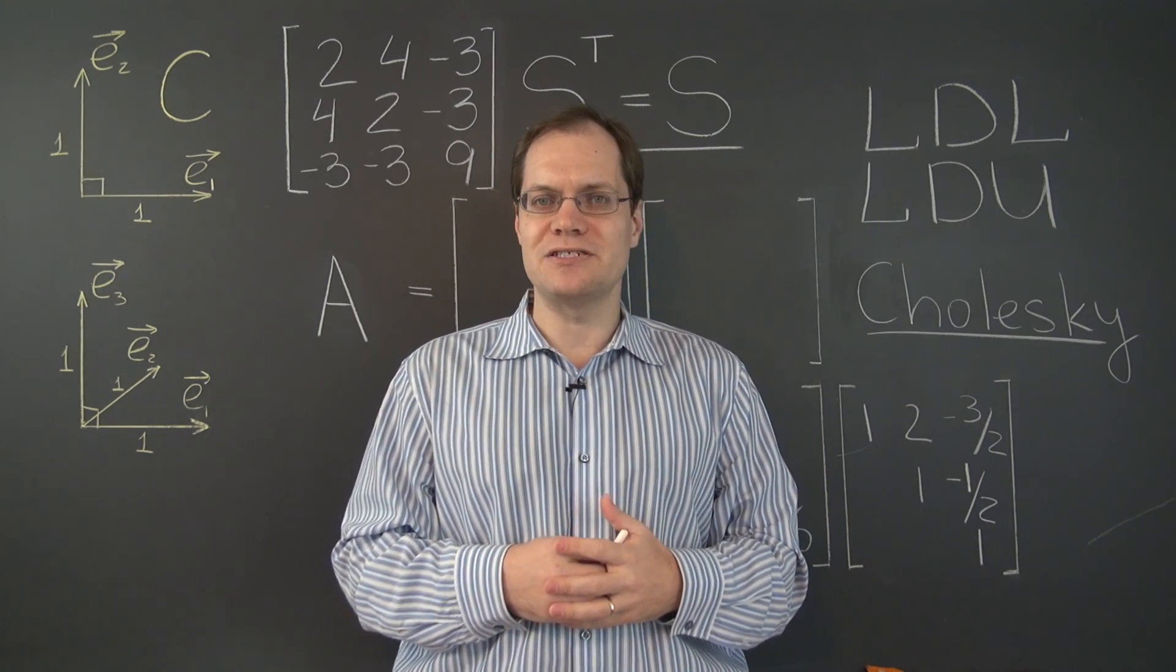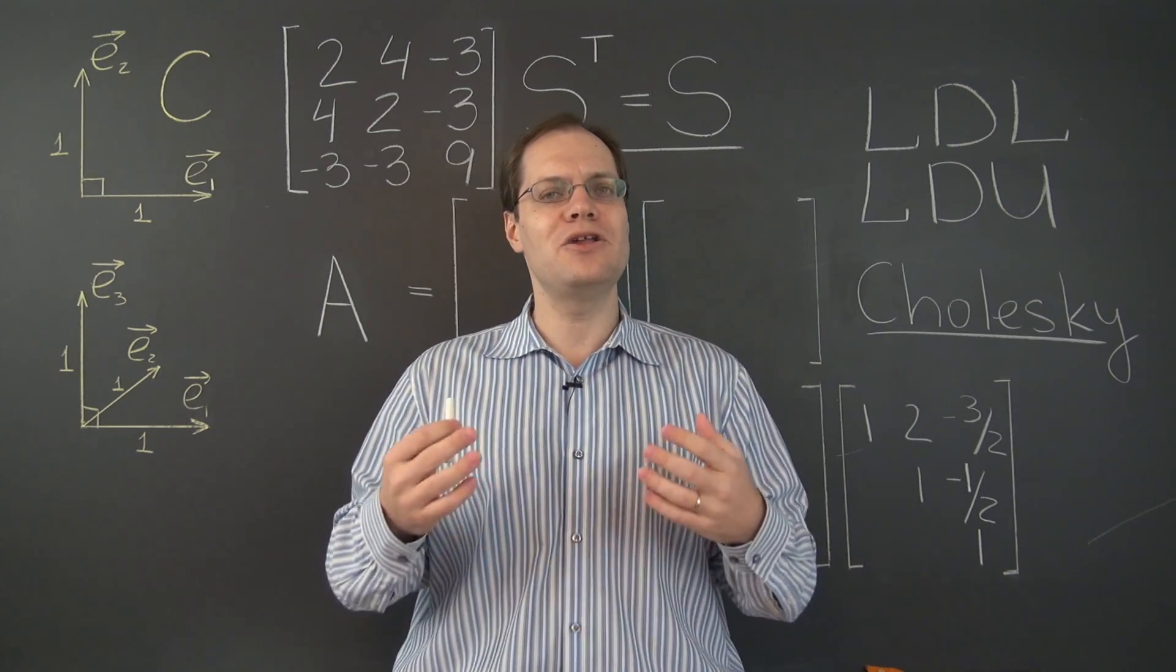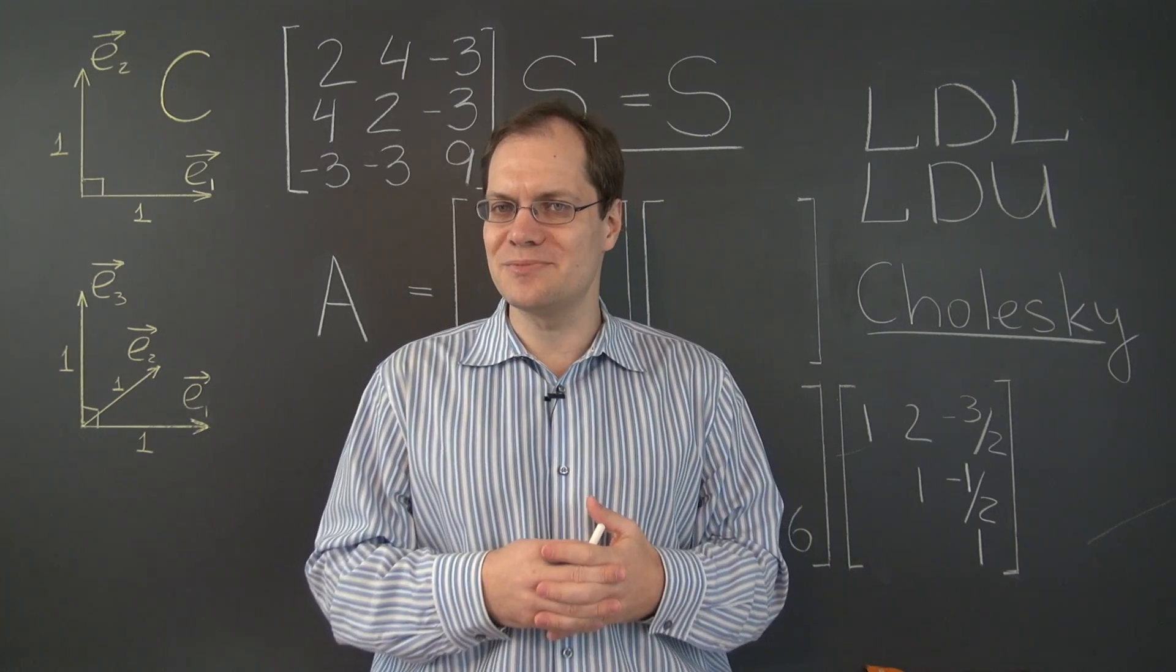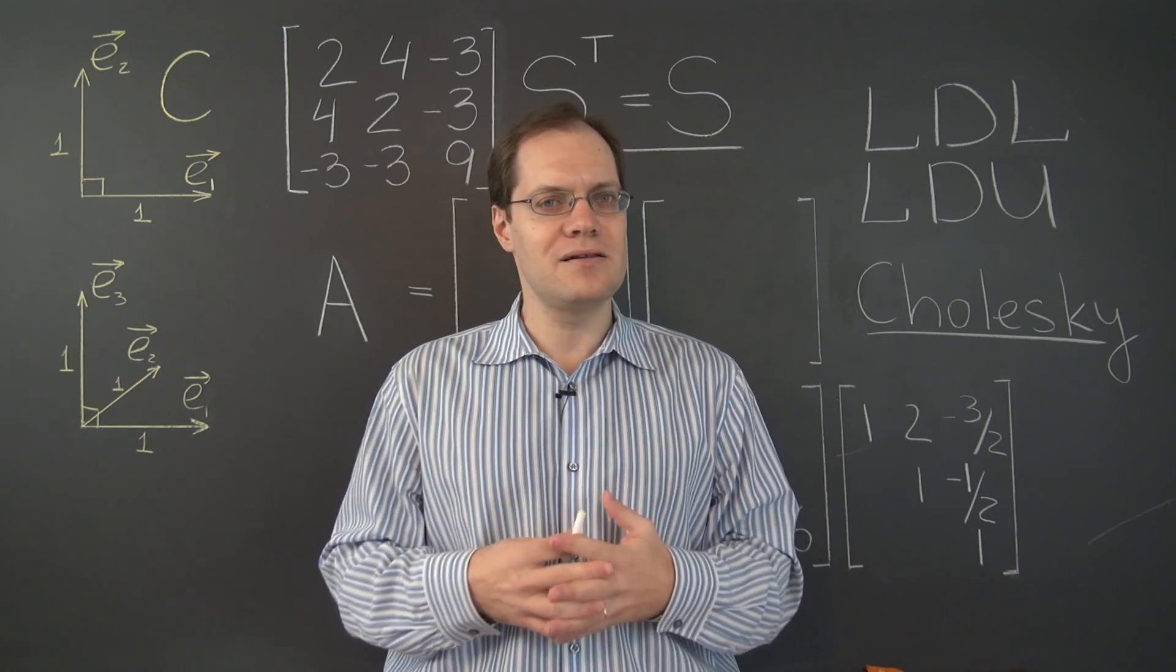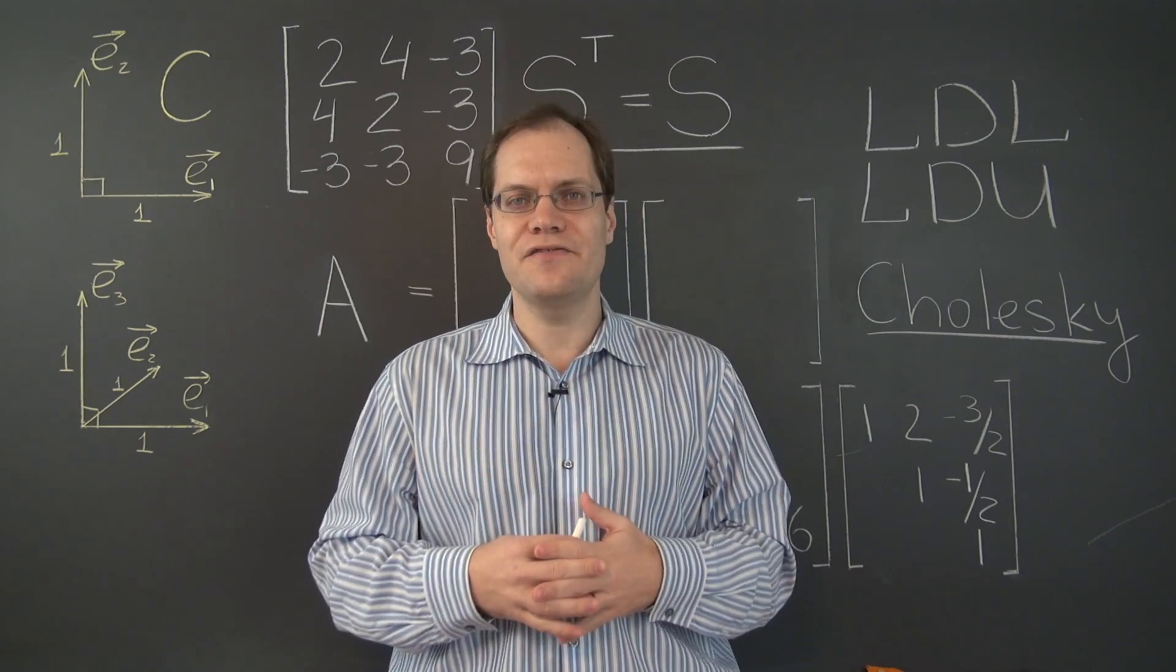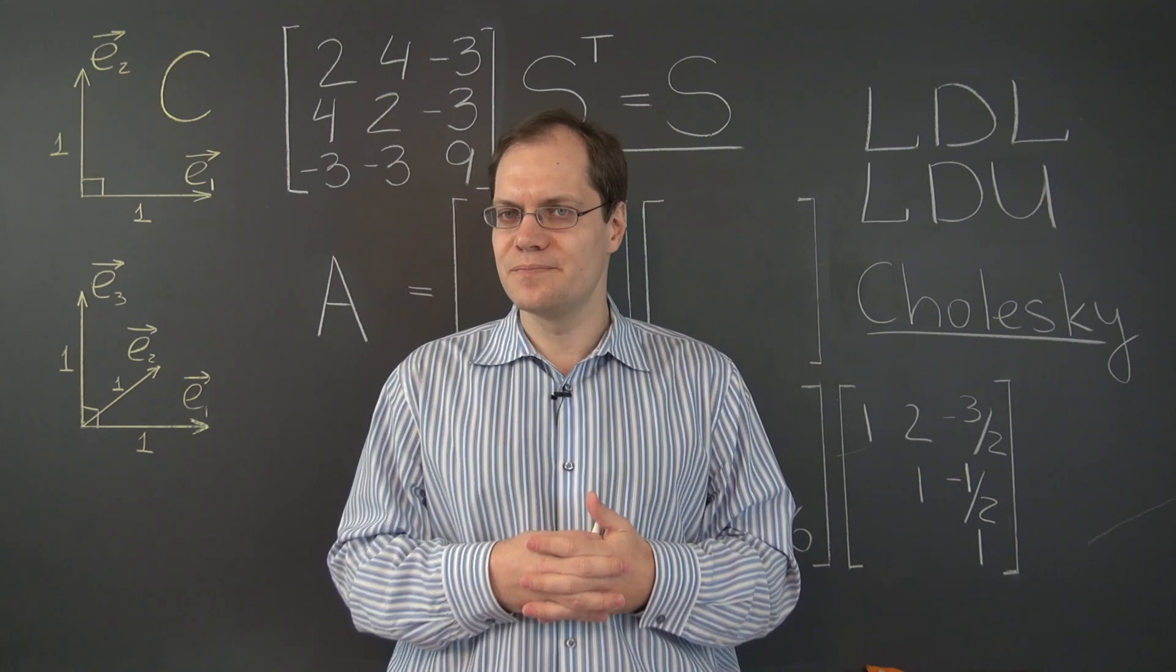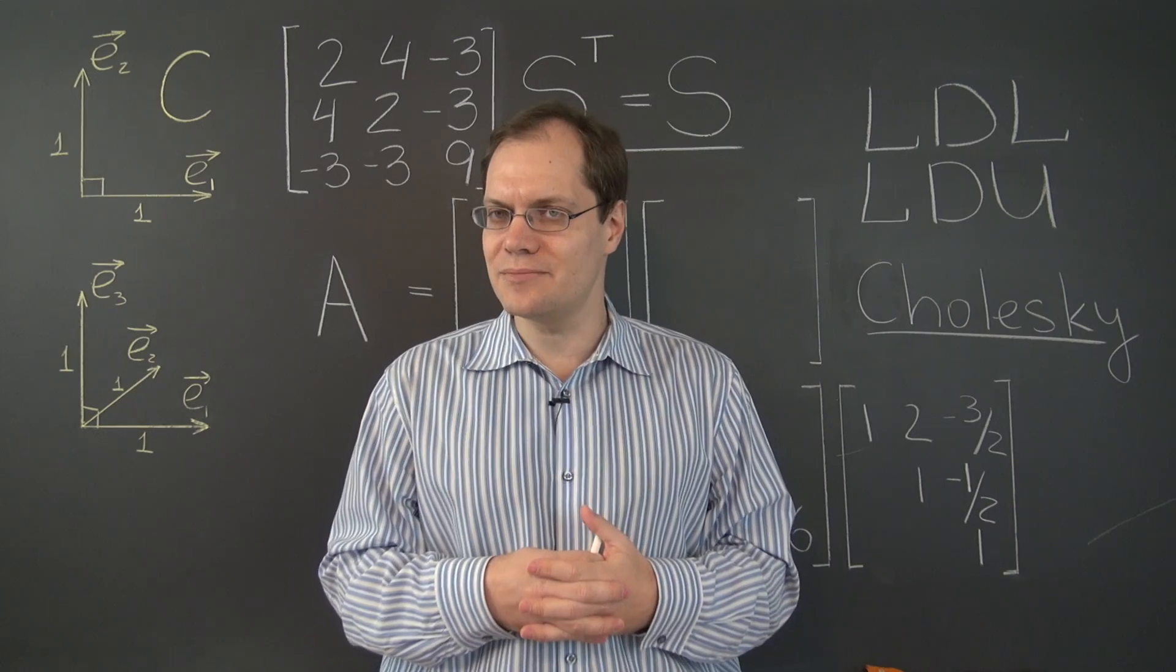The Cholesky decomposition is named after André-Louis Cholesky, about whom I know only what Wikipedia tells me. He was an officer in the French military and actually died in battle in World War I. Also, interestingly enough, he was a land surveyor, just like Wilhelm Jordan, after whom Gauss-Jordan elimination is named.